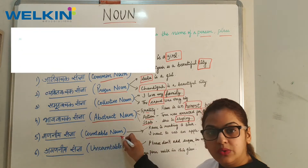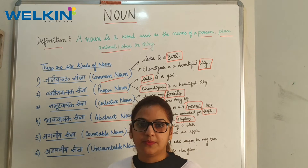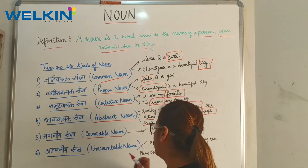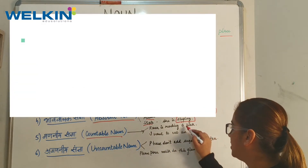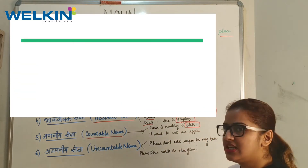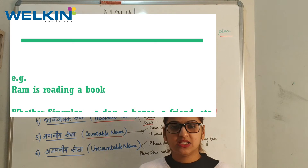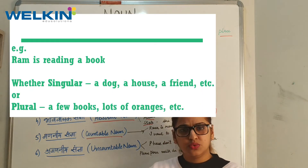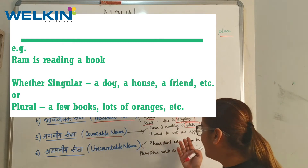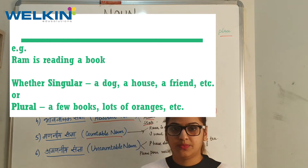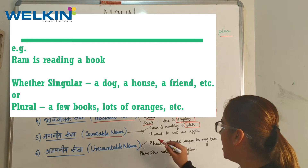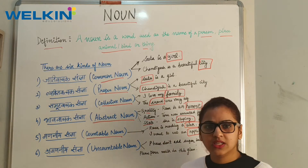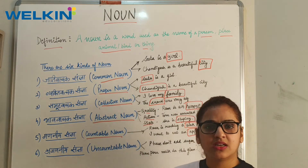Next is Countable Noun. Countable Noun ko Hindi mein kehte hai Ganiya Sangya — matlab jisko aap count kar sakte ho. Example: Ram is reading a book — 'book' is a countable noun. If you have 3 or 4 books, you can easily count them: one, two, three. Another example: I want to eat an apple — 'apple' is also countable, as you can easily count apples.